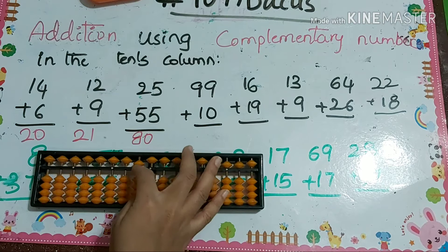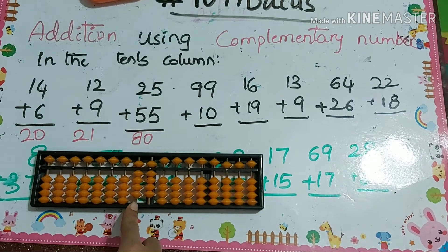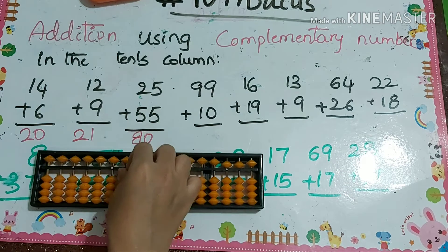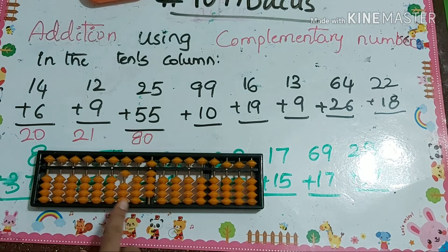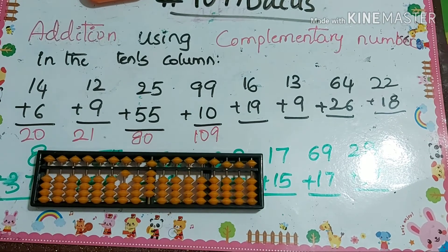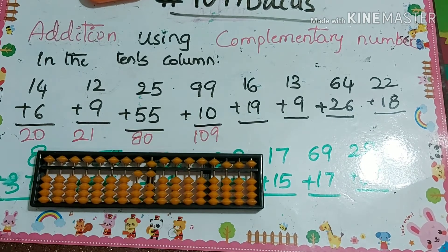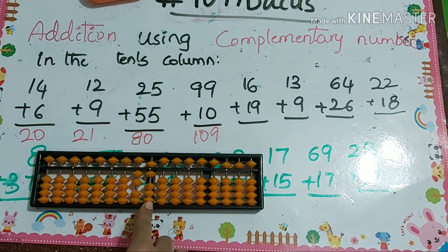Next: 99 plus 10. In the tens column we can't add, so we must add in the hundreds column, which is to the left side of the tens column. The answer is 109.